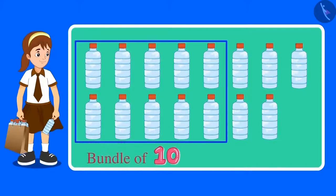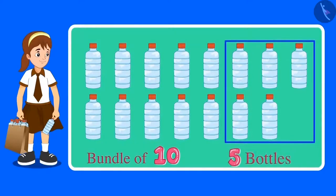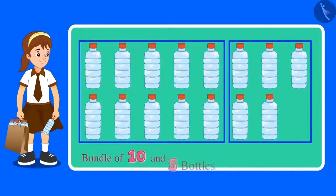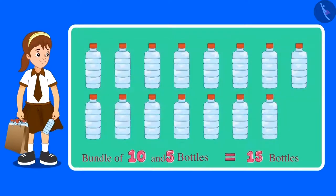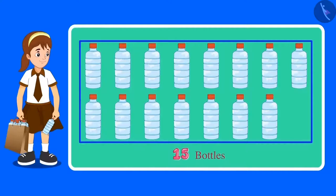These are 10 bottles — that is one bundle of 10 — and there are five more bottles. So a bundle of 10 and 5 more makes 15 bottles. This means that Aarti has collected a total of 15 bottles. Did you count in the same way?